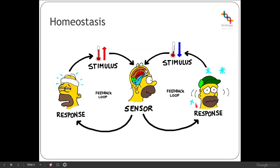Similarly, the stimulus of being too cold also produces both physiological and behavioural responses. If you're too cold you might shiver or get goosebumps, and your behavioural response might be to put warmer clothing on or move somewhere warmer. Those are good examples of how you may manage both behavioural and physiological changes in terms of temperature.